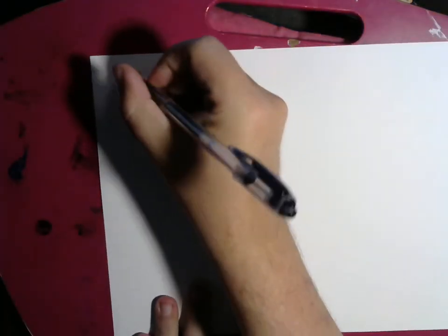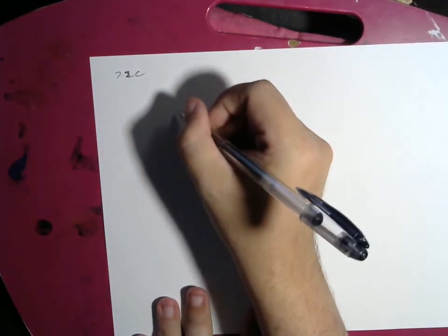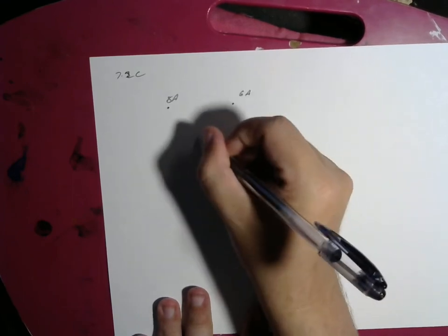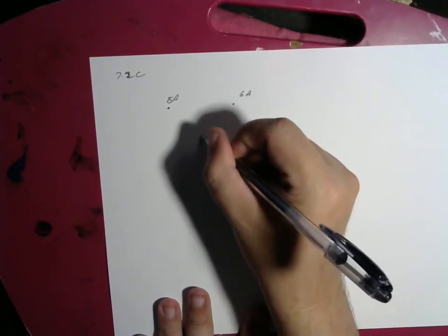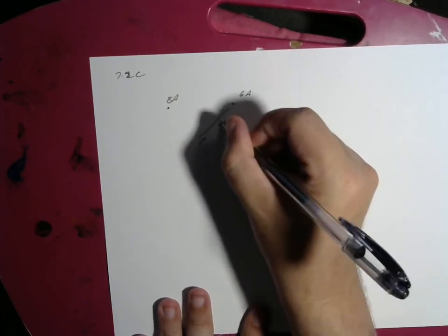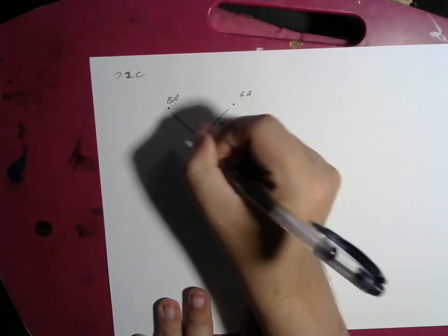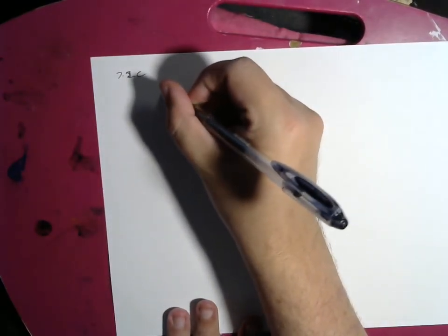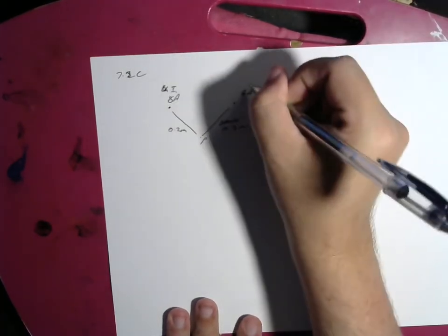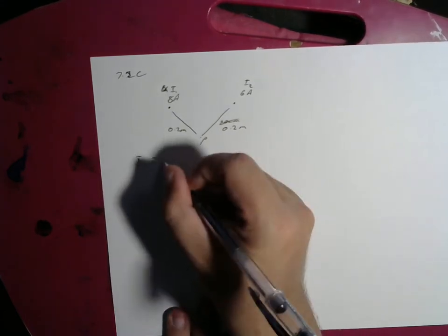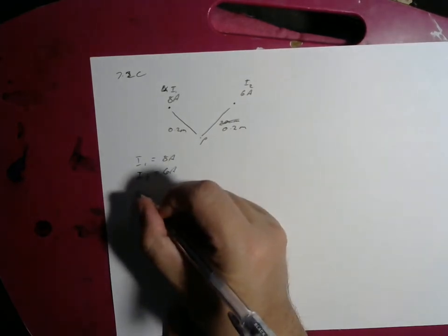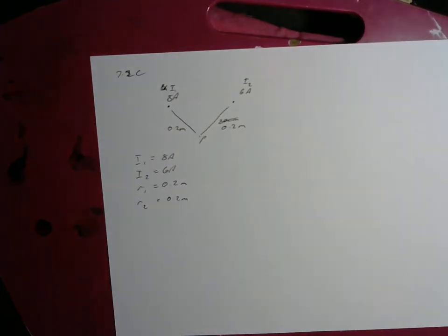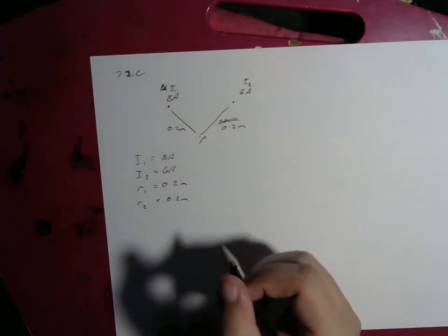Let's copy this down. 7.2C. This is 8 amps coming towards us, this is 6 amps coming towards us, and here is point P. This has 20 centimeters, that's 0.2 meters, and this is 0.2 meters. They use X and Y, I'm going to use B₁, I₁, so let's use I₁ and I₂. I₁ equals 8 amps, I₂ equals 6 amps, R₁ equals 0.2 meters, R₂ equals 0.2 meters. Let's do the exact same starting thing, work out our magnetic field strength first and then we'll worry about the directions.